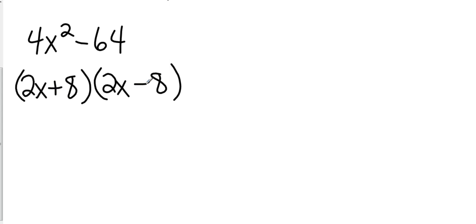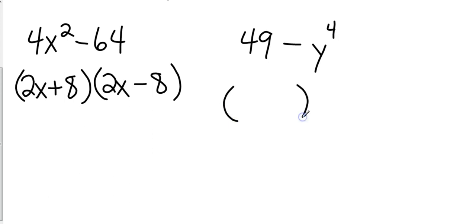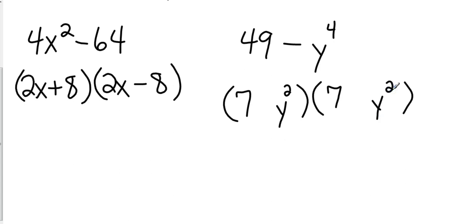Now let's look at something like 49 minus y to the fourth — looks a little different. Ask yourself the same questions: Is 49 a perfect square? Yes. Is y to the fourth a perfect square? Yes. Is this a difference? Yes. So two sets of parentheses, take the square root of 49 and the square root of y to the fourth, and we have plus and minus. It doesn't matter if the variables are at the end; we still do the exact same thing — the order just looks a little different.